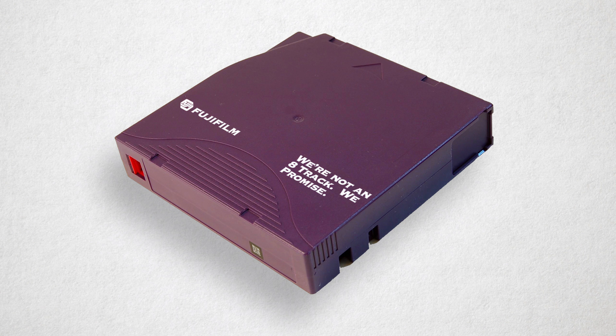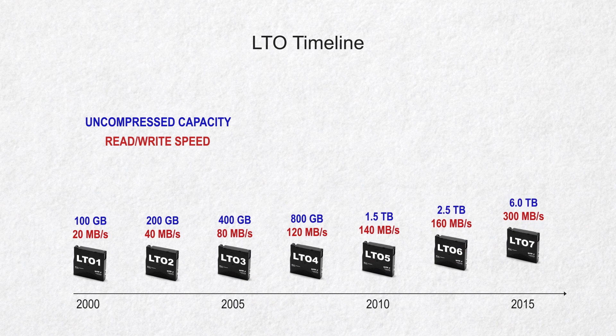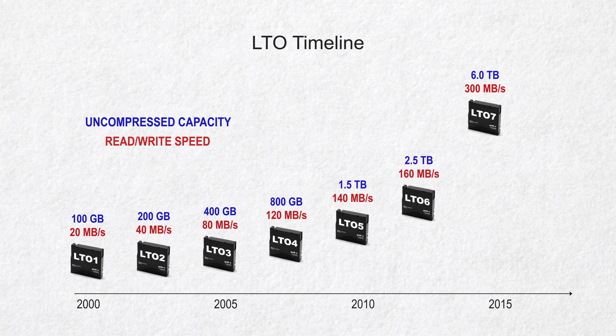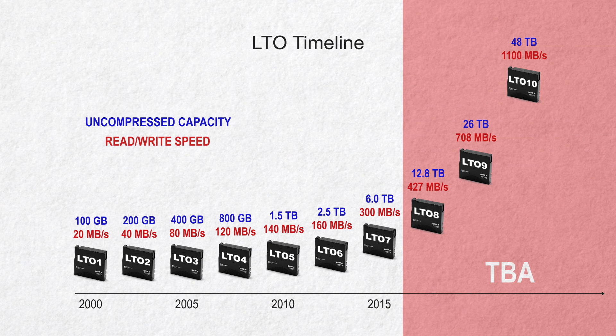Linear Tape Open was initially used to backup Excel documents and credit card numbers in data-centric business centers. It's only been over the past 8 or 9 years or so that the capacity, speed, and file accessibility has allowed LTO to be used in the realm most of us are familiar with — that is, with rich media.